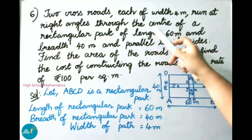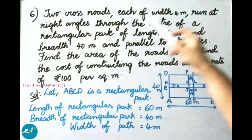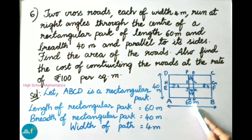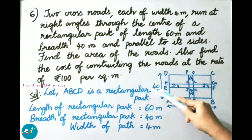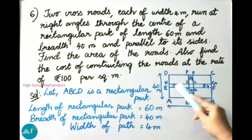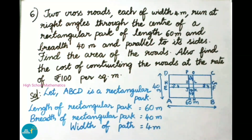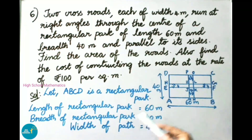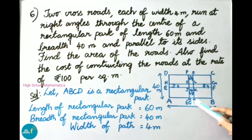Two crossroads, each of width 4 meters, run at right angles through the center of a rectangular park of length 60 meters and breadth 40 meters, and parallel to its sides. Find the area of the roads and also find the cost of constructing the roads at the rate of 100 rupees per square meter. Let ABCD be the rectangular park. Length is 60 meters, breadth is 40 meters, and width of the paths is 4 meters.